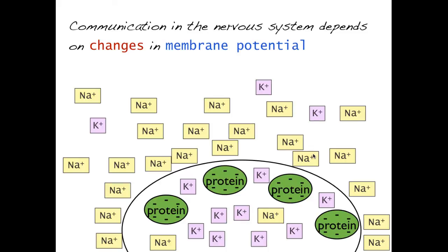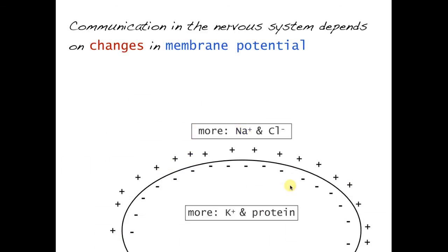This schematic shows you the distribution of ions and protein. Outside the cell, an abundance of sodium. Inside the cell, a higher concentration of potassium, and the large negatively charged proteins are in higher concentration inside the cell. To summarize: outside the cell, there's a higher concentration of sodium and chloride; inside the cell, a higher concentration of potassium and protein. Inside the cell has a resting membrane potential of about minus 70 millivolts.